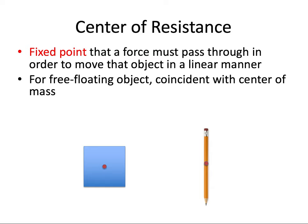First we have to talk about the center of resistance. The center of resistance is a fixed point that a force must pass through in order to move an object in a straight line. For a free floating object in space, the center of resistance would be coincident with the center of mass. So for this uniform square, the center of resistance is right at its center. If we push the square from the left and the force is applied through that center of resistance, the square will translate to the right.